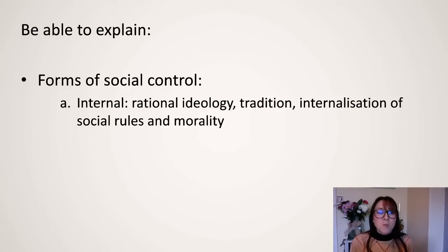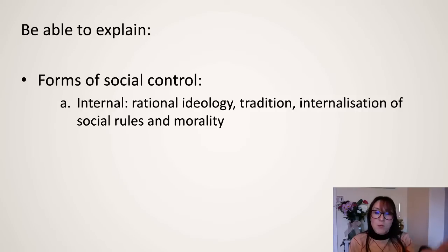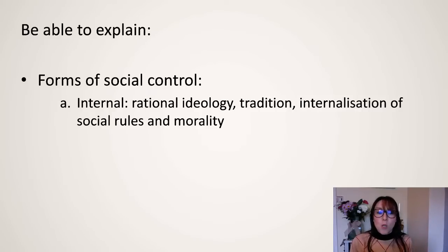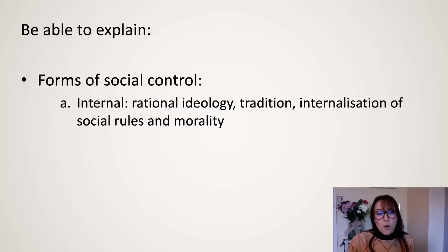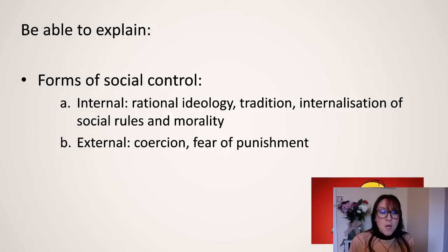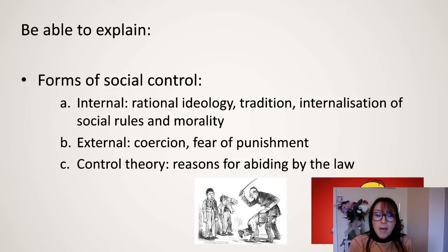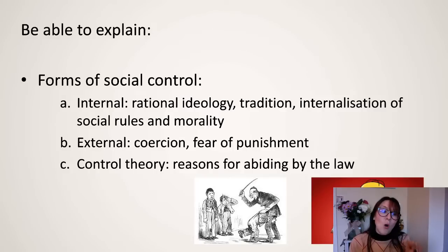You need to be able to explain the forms of social control. The internal ones you need to know are rational ideology, tradition, and internalisation of social rules and morality. The external ones are coercion, fear of punishment, and control theory — the reasons for abiding by the law. So these are all the areas you need to know.